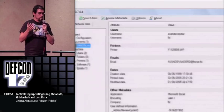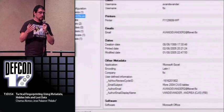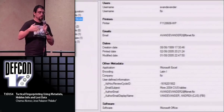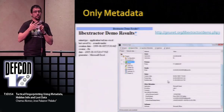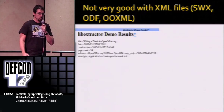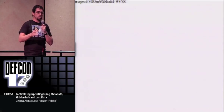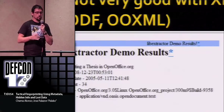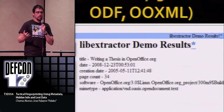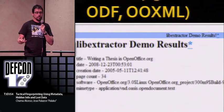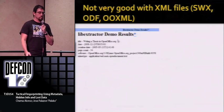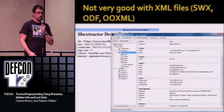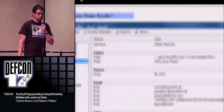We created a tool that looks at absolutely every piece of metadata you can find. Another example: Livextractor is not very good with XML files, and most of the latest Office document formats are XML. So there's almost nothing found in a file analyzed by Livextractor, but a lot of information found with the tool we created.